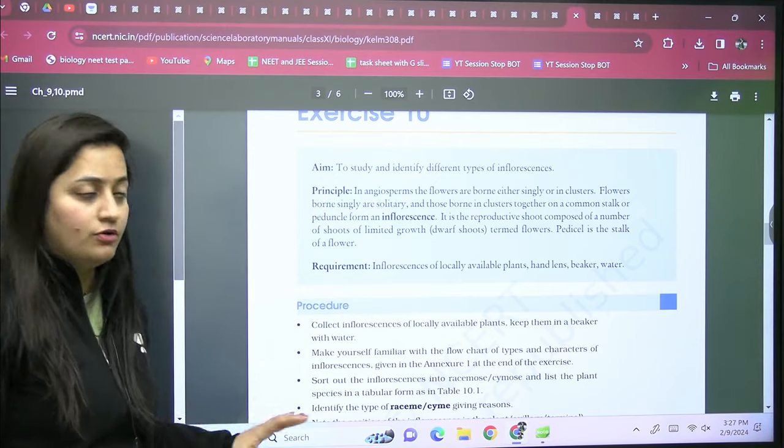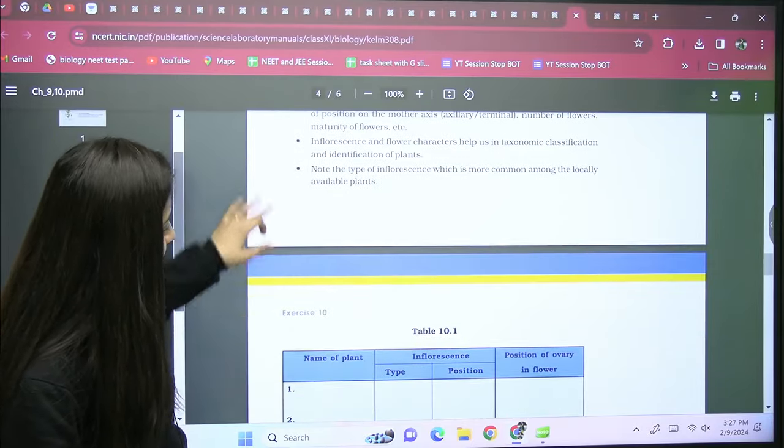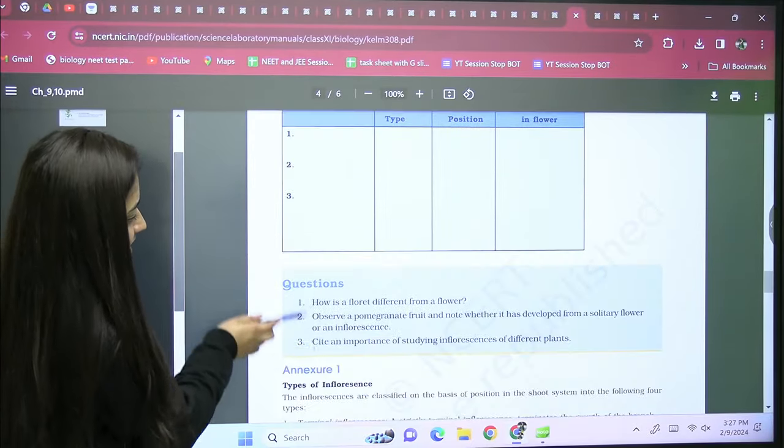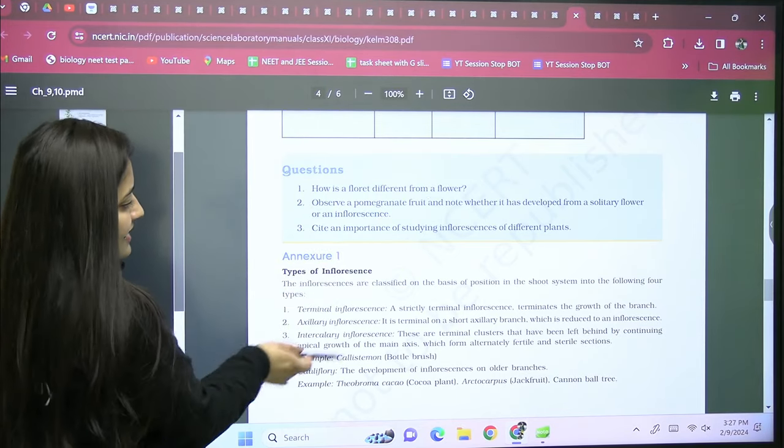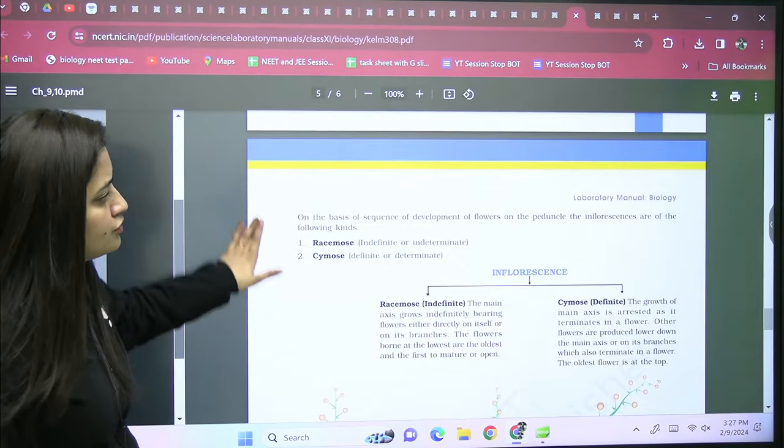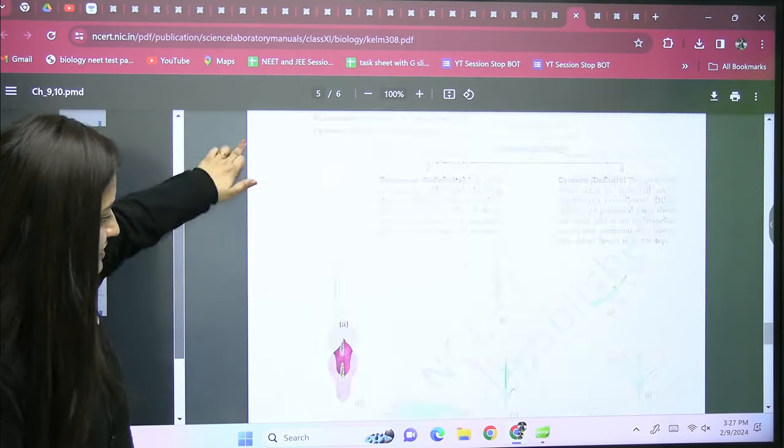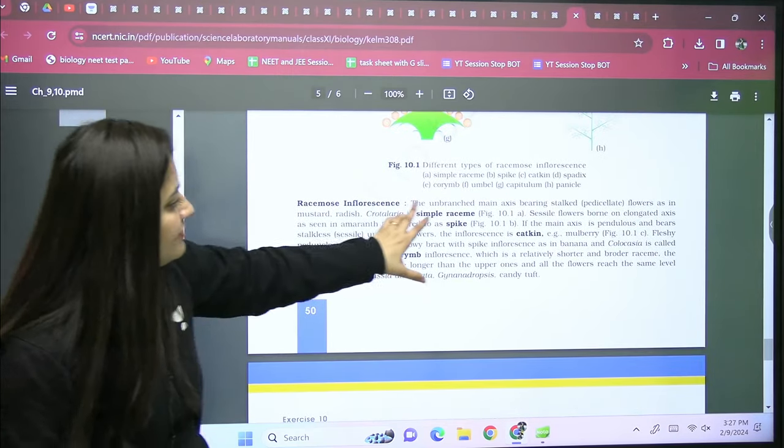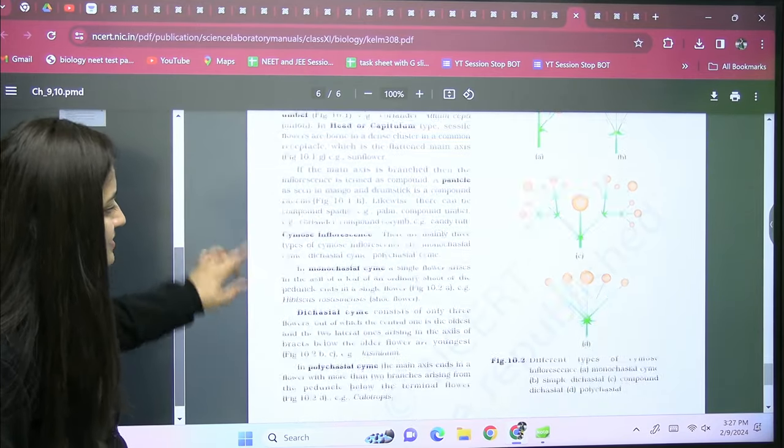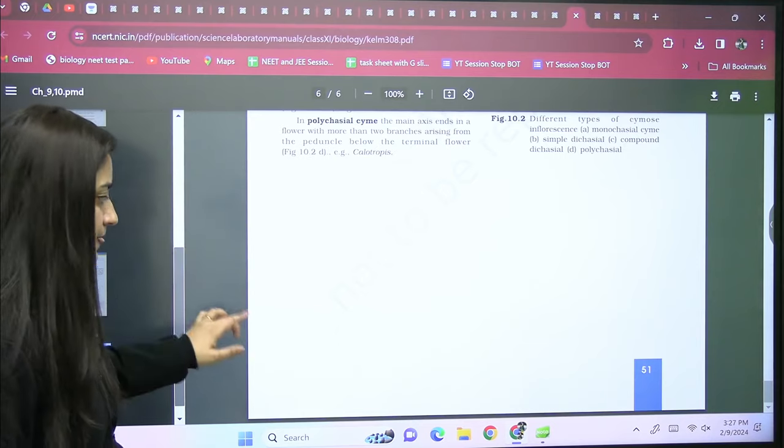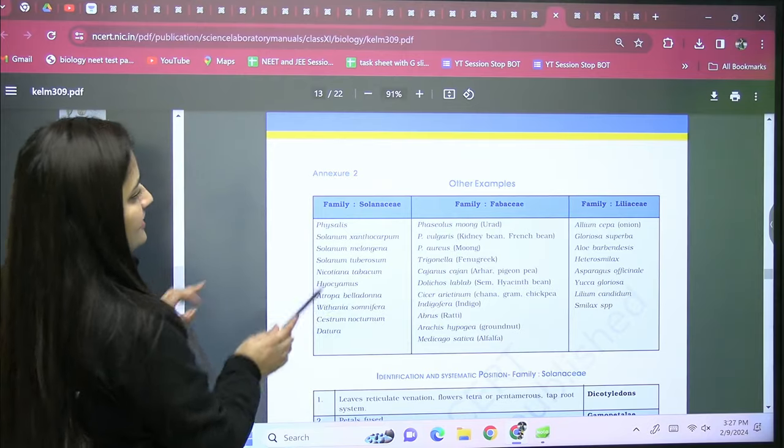Different types of inflorescence - in our syllabus we know that we have racemose and we have cymose. So here they have added the plant type, the questions here - how is inflorescence different from a flower, like this. So you can also use this data, this lab manual, for the revision. Racemose is given here. They have explained a few examples as well. You can use this data for your revision. It is covering your complete NCERT.